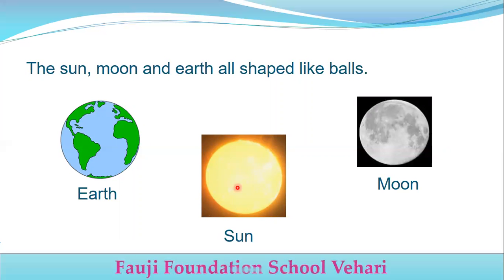The sun, moon, and earth, all shaped like balls. Earth's shape is like a ball. The sun is also shaped like a ball, and the moon too.